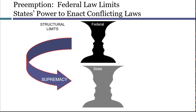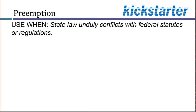The Supremacy idea is easy. The tricky part is deciding when a state law conflicts enough with a federal law to be invalid. And as with any doctrine, the first step is to identify whether we even have a preemption problem. For there to be a conflict between federal and state law, there needs to be some law at both levels — a state law, and a federal statute or regulation.